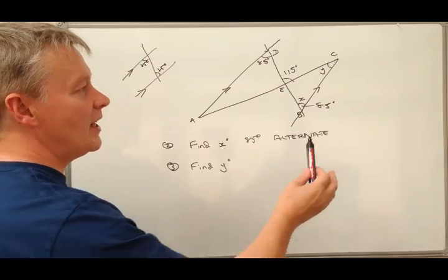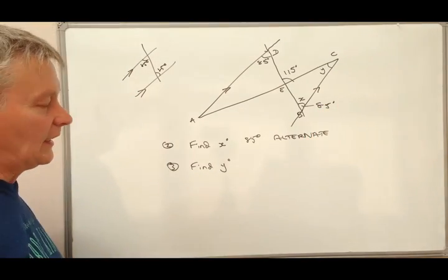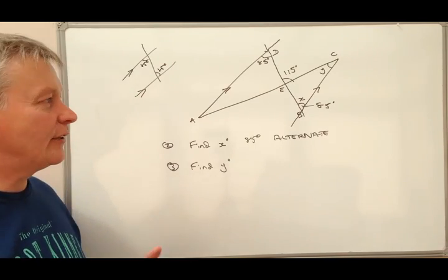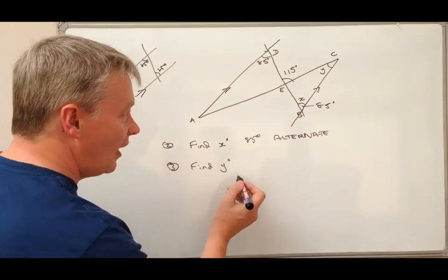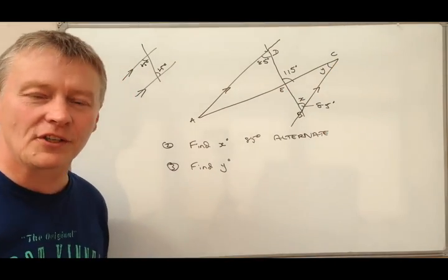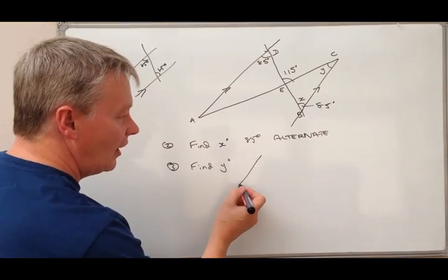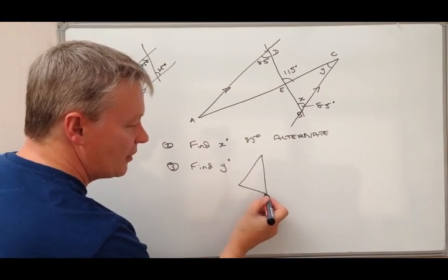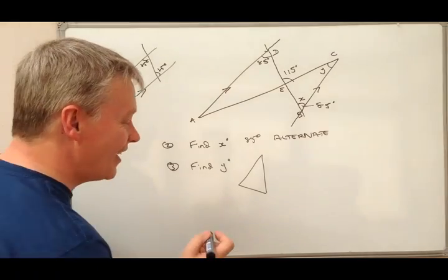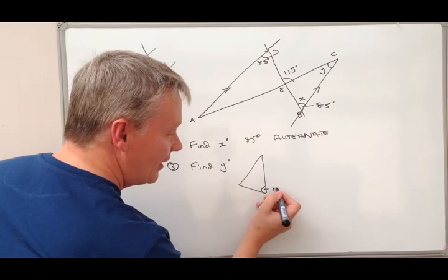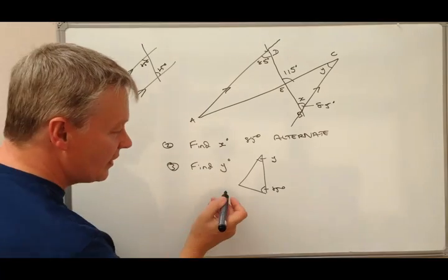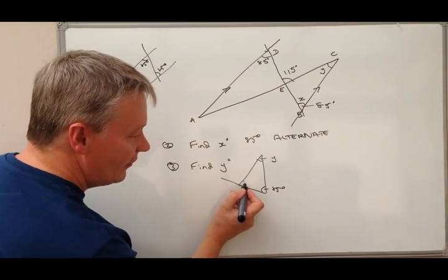So the next thing we need to work out is the value of Y. Well, again, you need to sometimes redraw these pictures to make it fairly clear to yourself. So I'm going to just do just that. So all I'm going to do is I'm going to draw this triangle because one of the things we know about a triangle is that the interior angles add up to 180 degrees. So here we've got an angle of 85 degrees. We're looking to get this one, which is Y. But what we don't know is this one at the bottom.